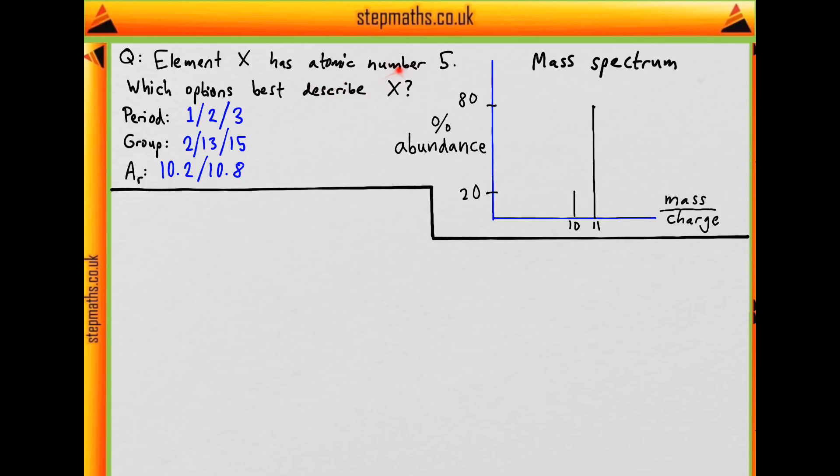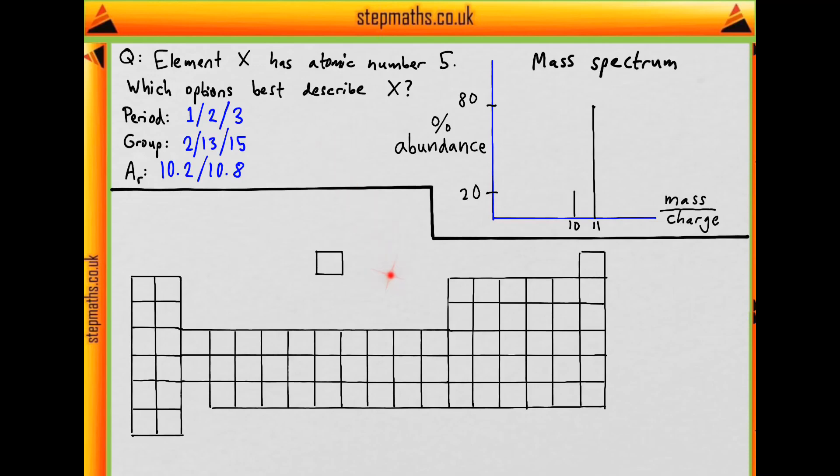We're told it has atomic number 5. What do we know about atomic numbers? They increase sequentially across the periodic table. If we can visualize the periodic table, we don't have to remember every detail, but we should know its general shape.